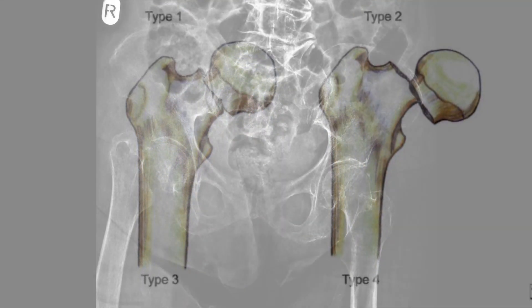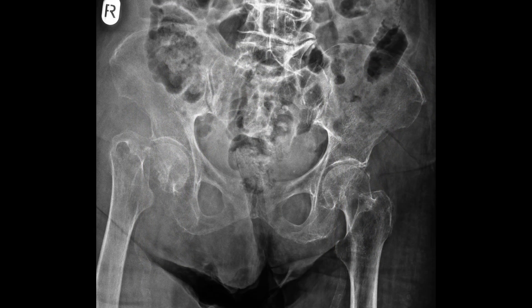In this radiograph we have a subcapital femoral fracture. Let's discuss a little bit about normal anatomy and then go back to the classification for subcapital femoral neck fractures. Here we have the femoral head, and a fracture along this margin would be a subcapital femoral fracture.